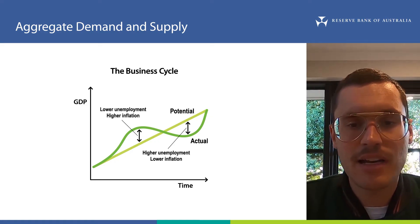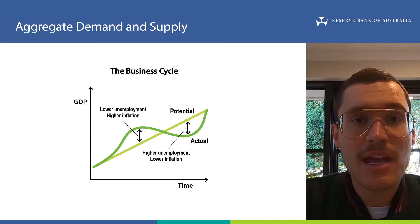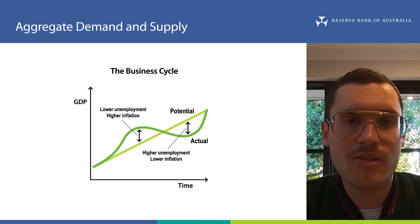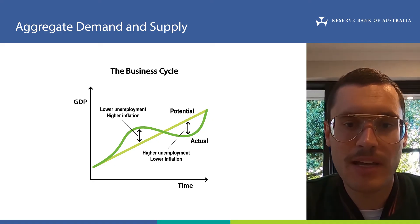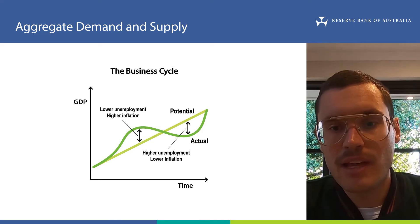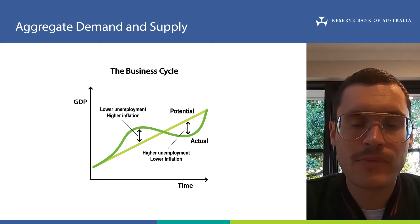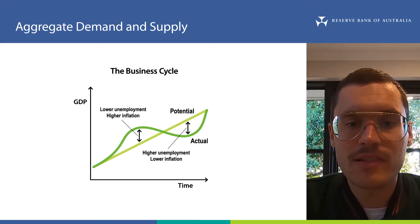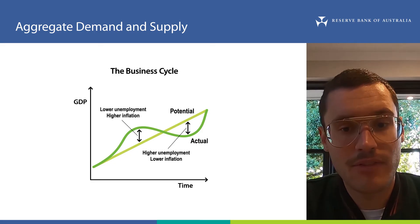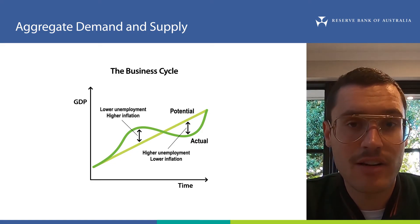During these fluctuations, unemployment and inflation vary as well. When aggregate demand grows much faster than aggregate supply, or actual GDP is increasing by more than potential GDP, there'll be more demand for goods and services. Businesses will require more labour inputs, and unemployment will fall. Because there's excess demand, there'll be upward pressure on prices and therefore higher inflation — and vice versa when aggregate demand is growing more slowly than aggregate supply.